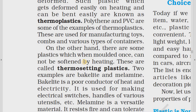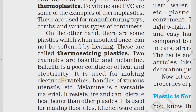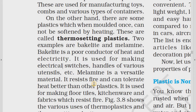Now we will understand thermosetting plastics. There are some plastics which, when molded once, cannot be softened by heating — these are called thermosetting plastics. Two examples are bakelite and melamine. Bakelite is a poor conductor of heat and electricity, so it is used for making electrical switches, handles, and various utensils.